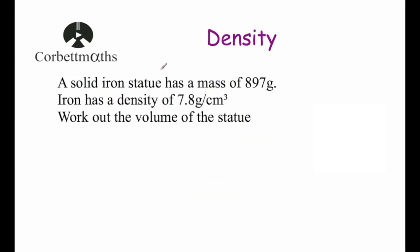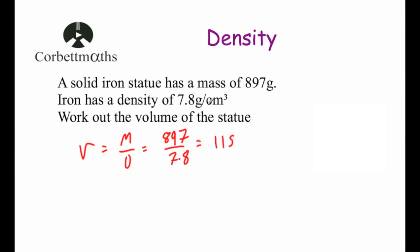Our second example: a solid iron statue has a mass of 897 grams, and iron has a density of 7.8 grams per centimeter cubed. Work out the volume of the statue. Volume = mass divided by density. Before substituting, we check units — our density is in grams per centimeter cubed, so the mass must be in grams. It is, so mass = 897 and density = 7.8. Dividing gives 115 centimeters cubed.